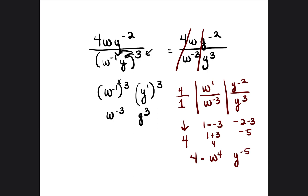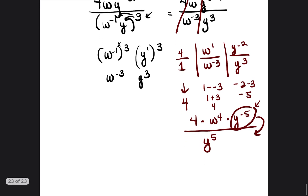So far we have 4 times w to the fourth power times y to the negative 5th power. Now that we've multiplied everything out, we have to make sure every exponent in the final answer is positive. Because y to the negative 5 is a negative exponent on top, we make it positive by putting it on the bottom of the fraction as y to the fifth. So our final answer is 4w to the fourth over y to the fifth.